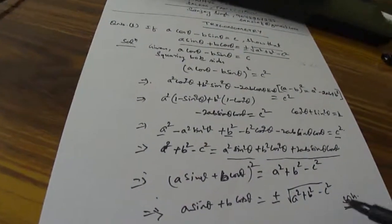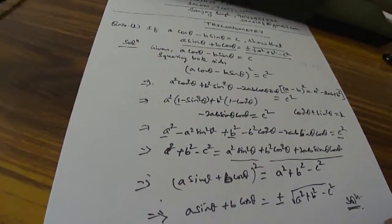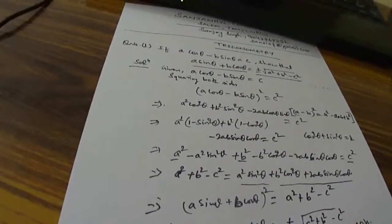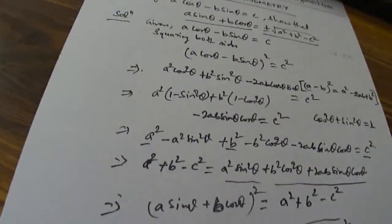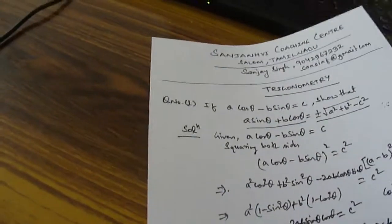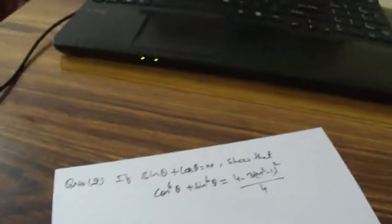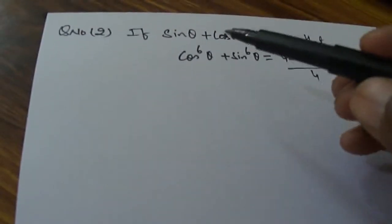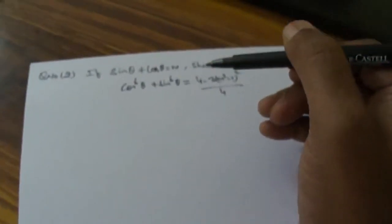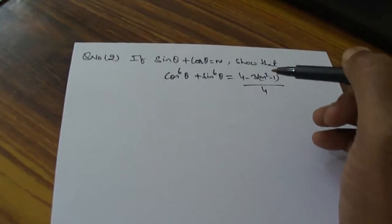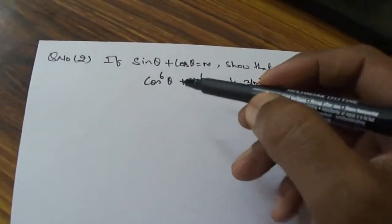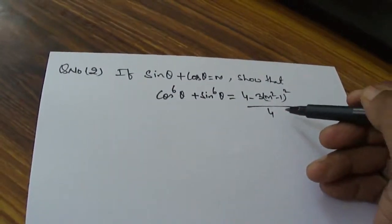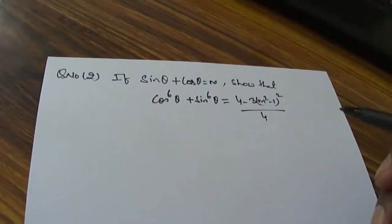I will come with another video and again we will be solving some questions so you will find how easy it will be. So let us go for another question. Another question says: if sin θ plus cos θ is equal to m, we need to show that cos⁶θ plus sin⁶θ is equal to (4 minus 3(m²−1)²) divided by 4.